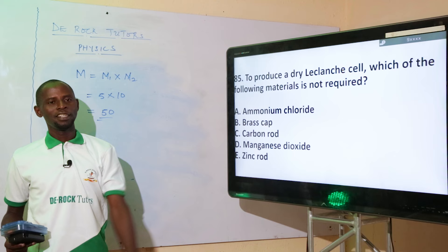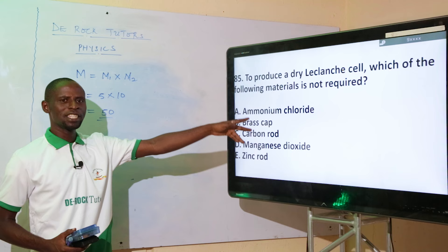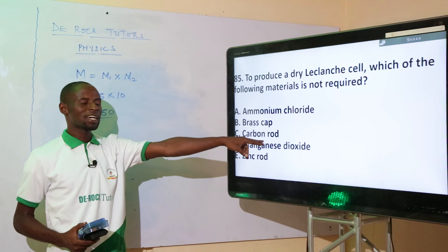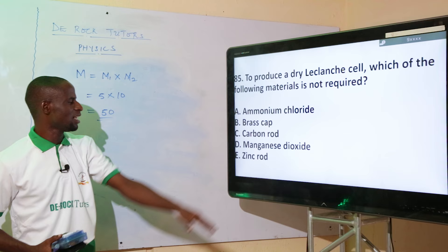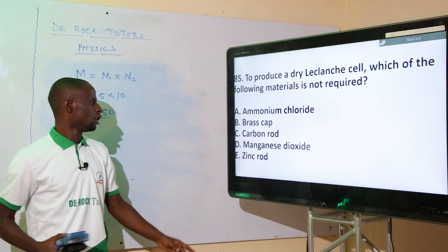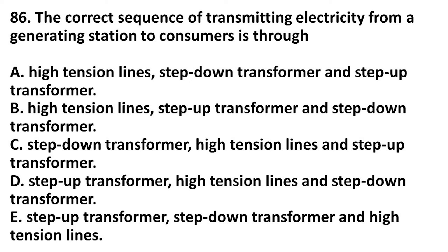What is not required to produce a Leclanché cell? The carbon rod is the positive terminal (anode), manganese dioxide is the depolarizer, and the zinc rod is the negative terminal (cathode). The correct option is option B: the brass cap — it is not part of the Leclanché cell construction.